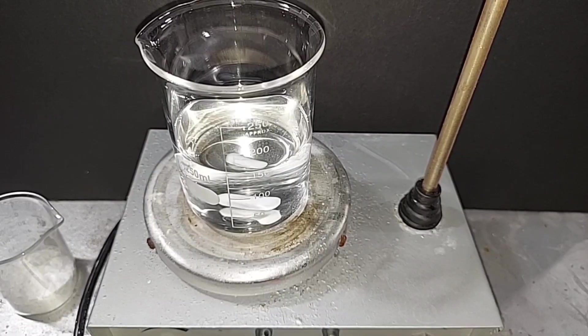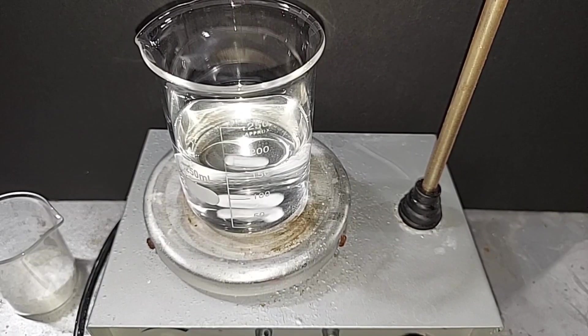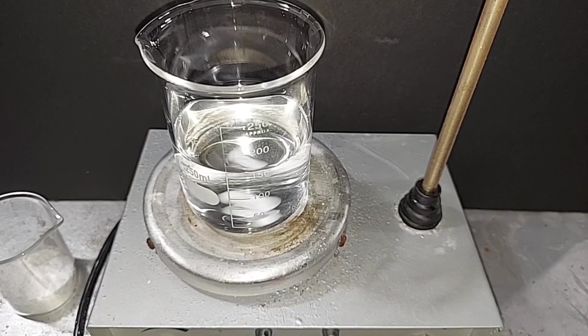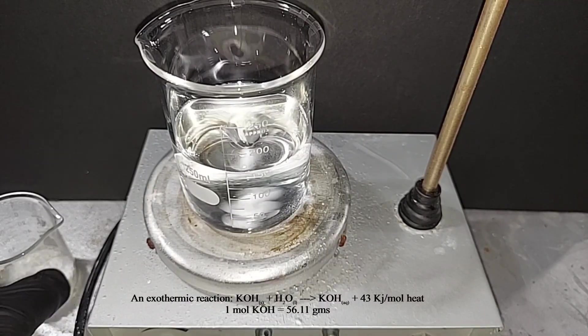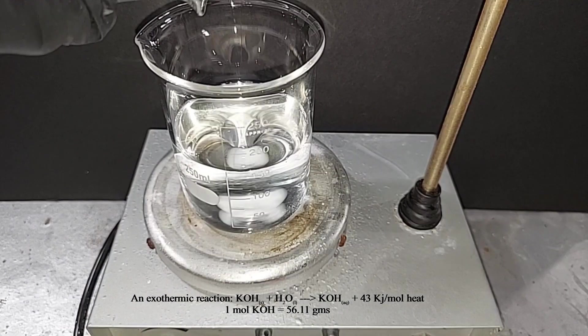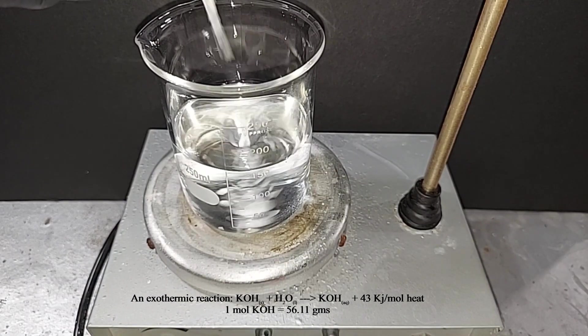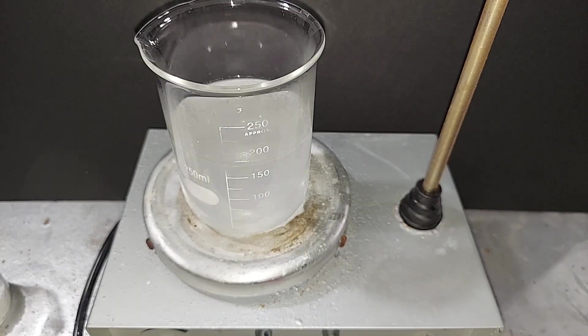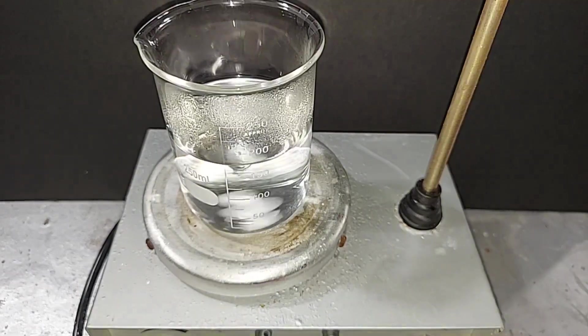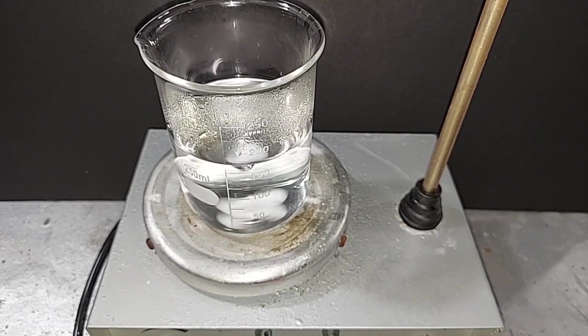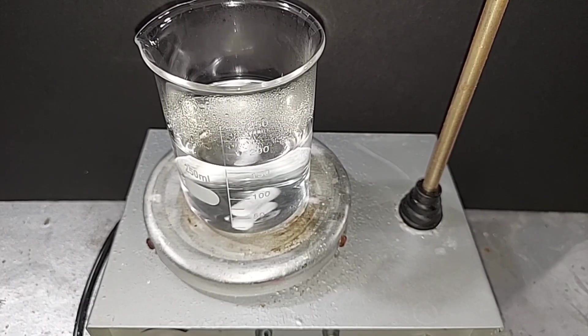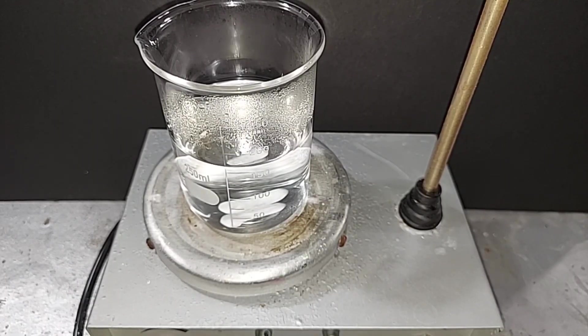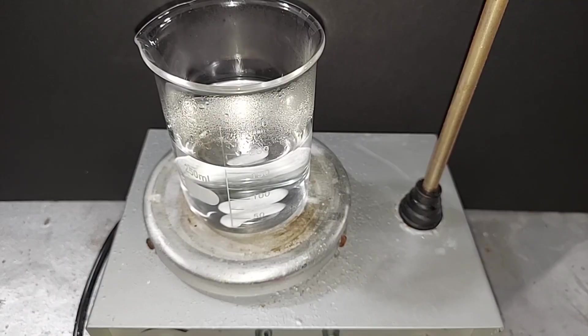Next, we're dissolving the potassium hydroxide with the stir going again, 150 milliliters of distilled water. The potassium hydroxide is completely dissolved and I'll turn down the magnetic stir. You can see what an exothermic reaction it is to add that potassium hydroxide to water because of the steam around the top of the beaker there.